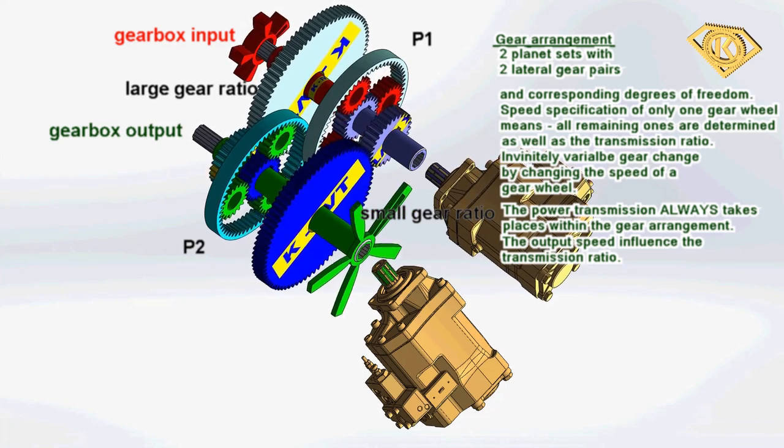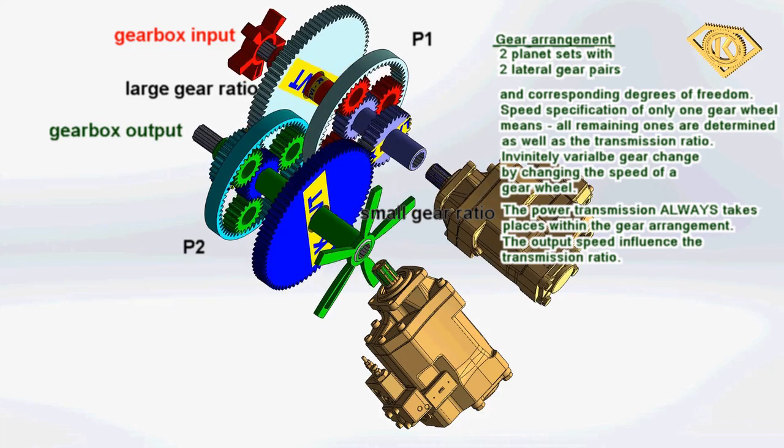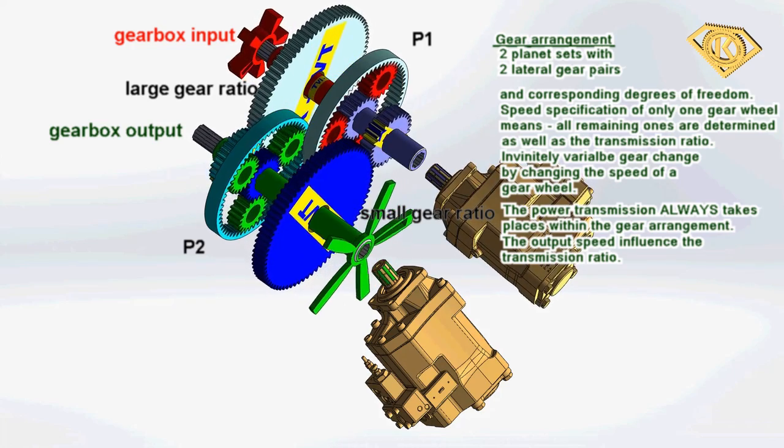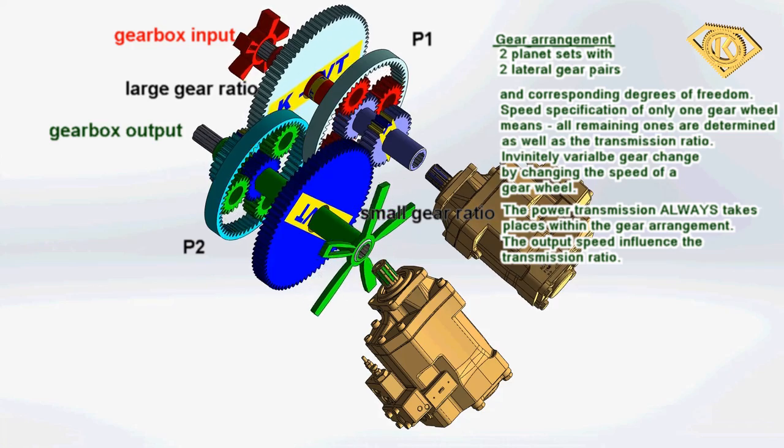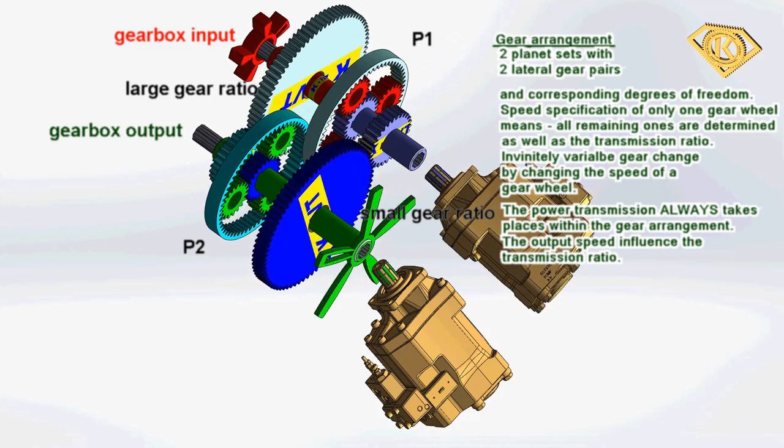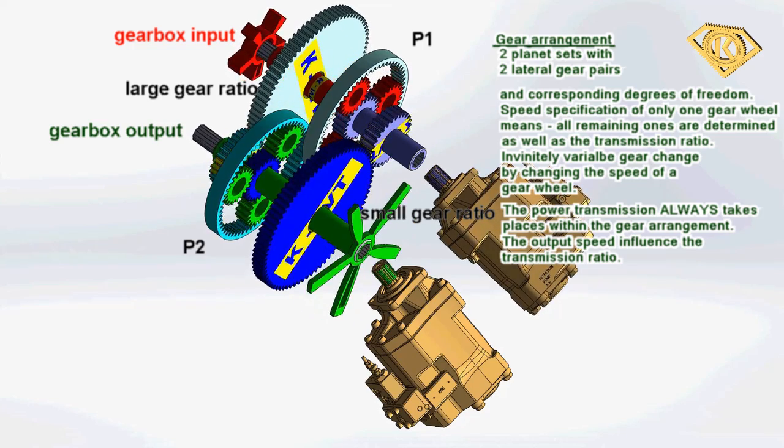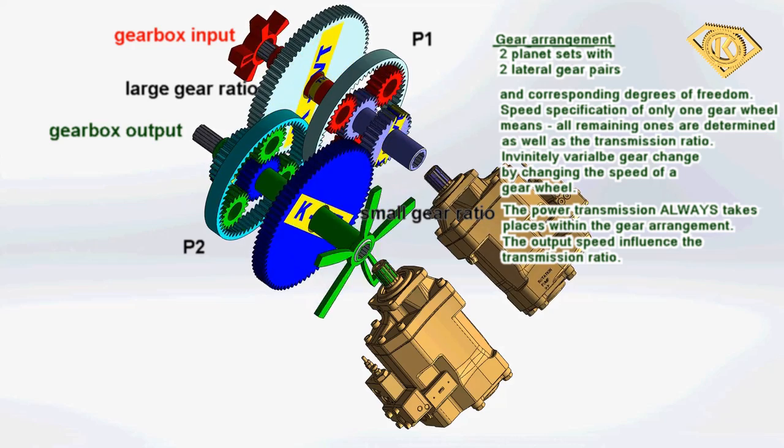By changing speed on the output shaft, this one gear wheel will be changed in speed again. Thus, unimaginably high transmission ratios are possible. Depending how much speed is transferred from the output to this gear wheel, the transmission ratio is also determined.